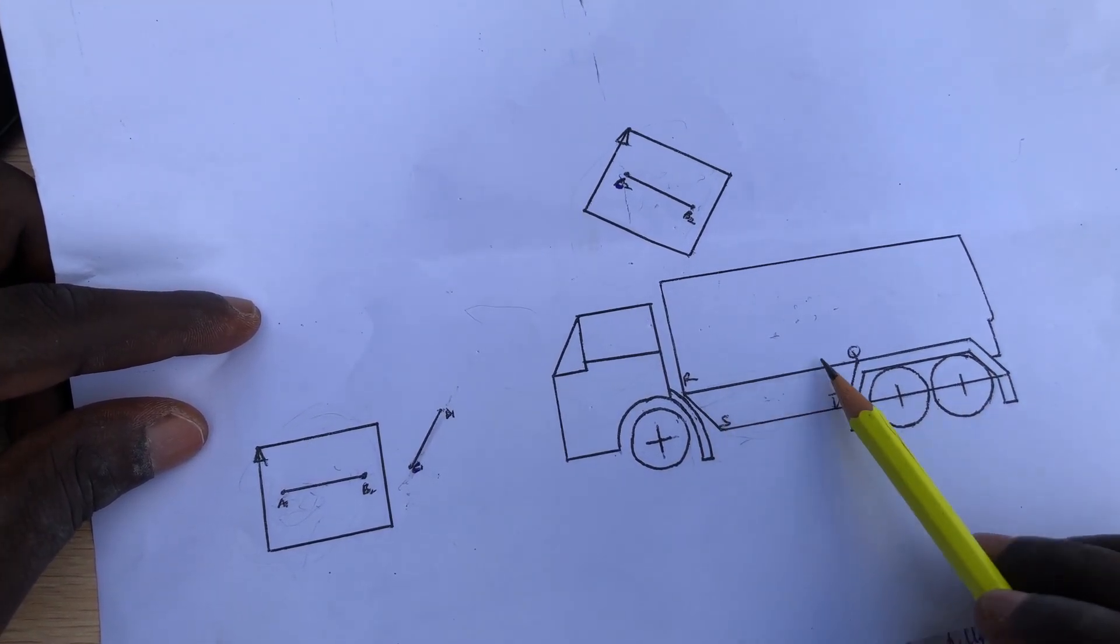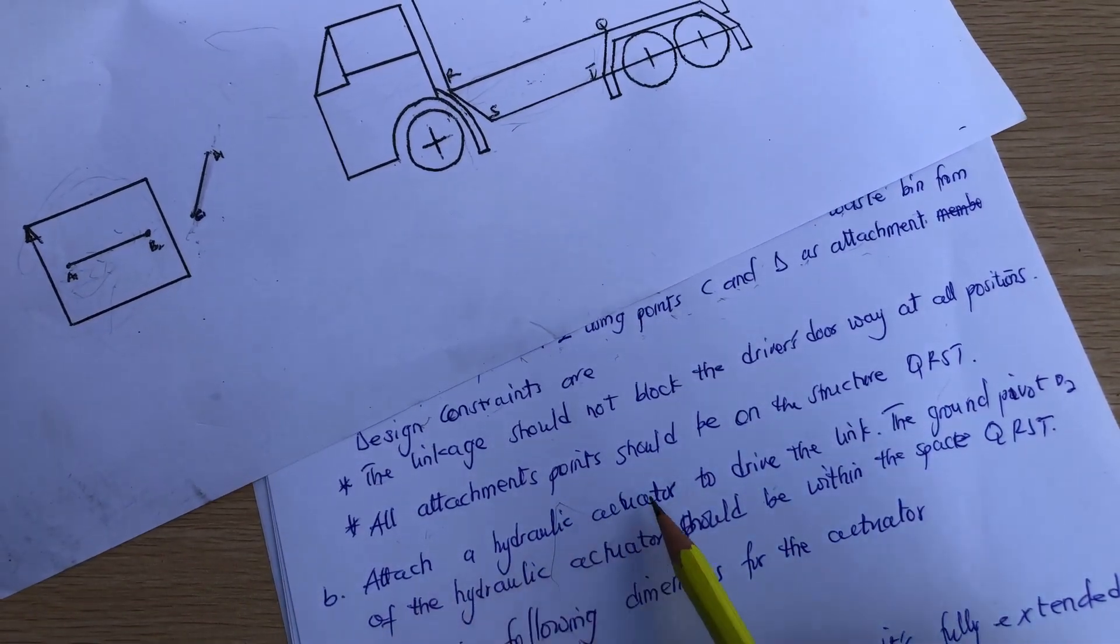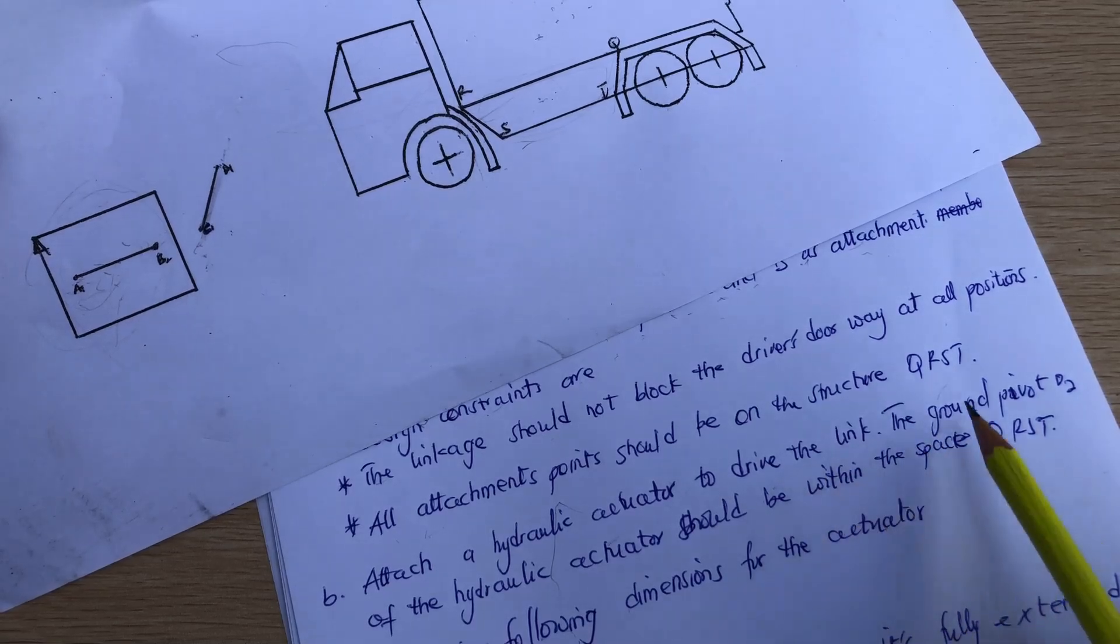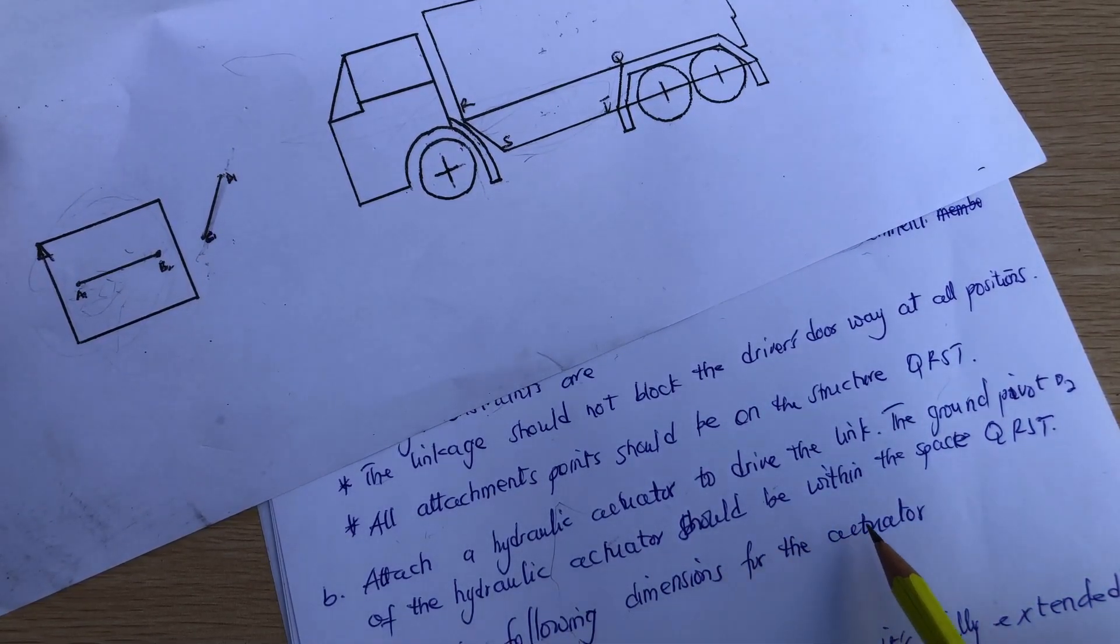Attach a hydraulic actuator to drive the link. The ground pivot O2 of the hydraulic actuator should be within the space Q or existing the following dimension.